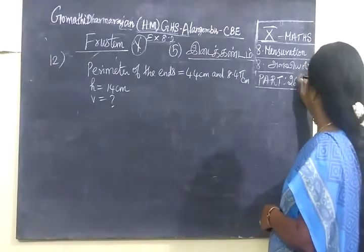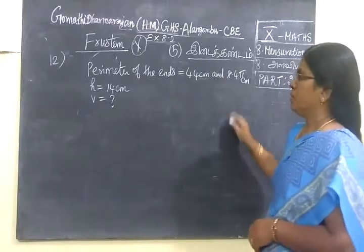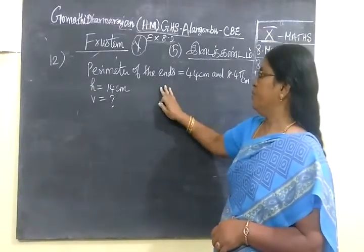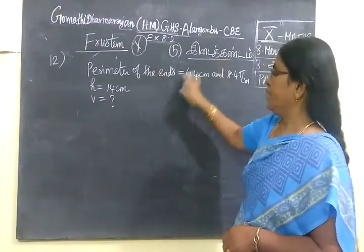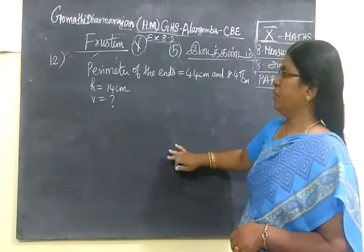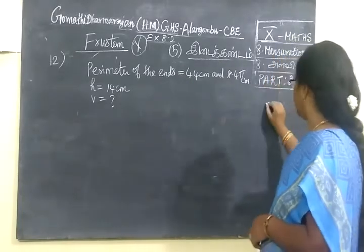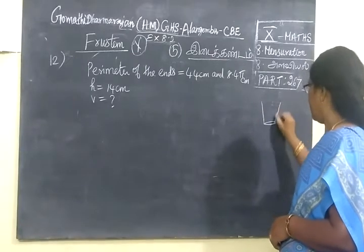Next we want to see part 267. This is also the same type of problem. First, we will take the perimeter of the ends.